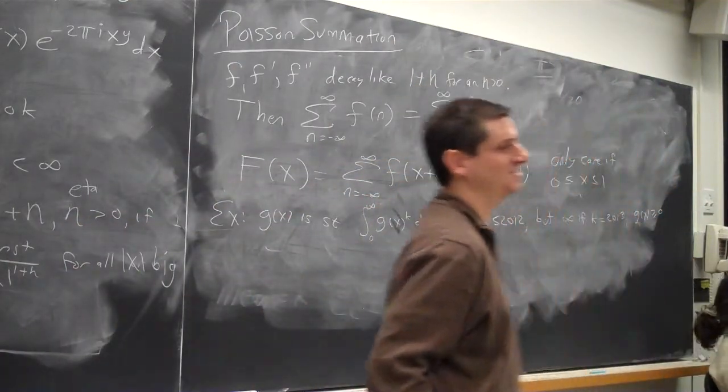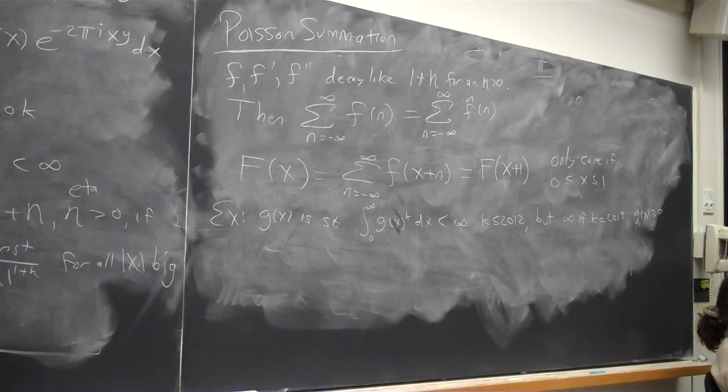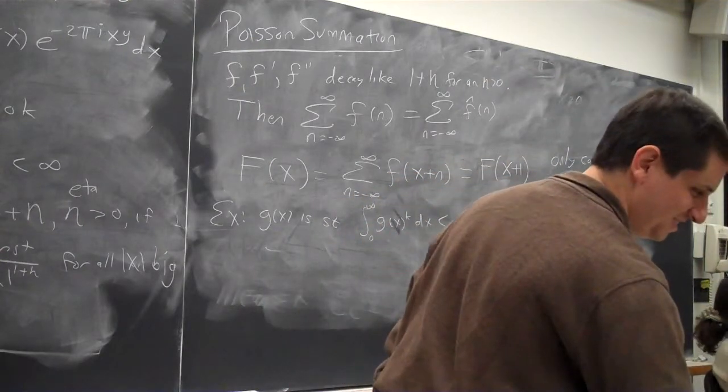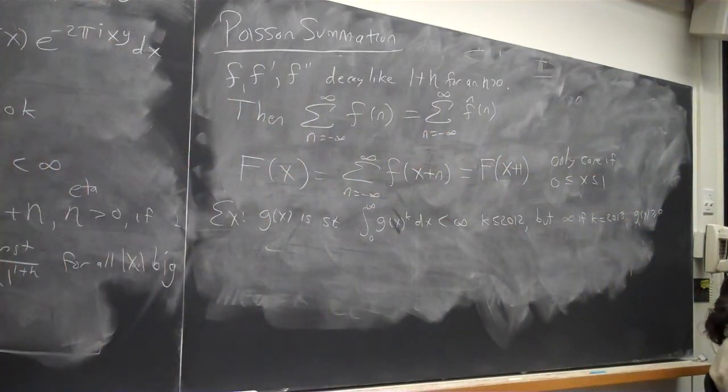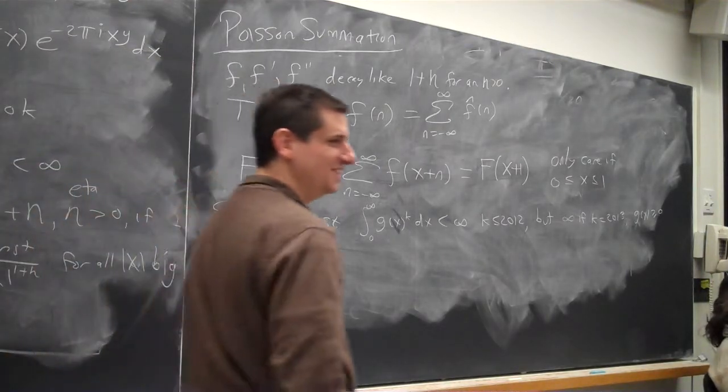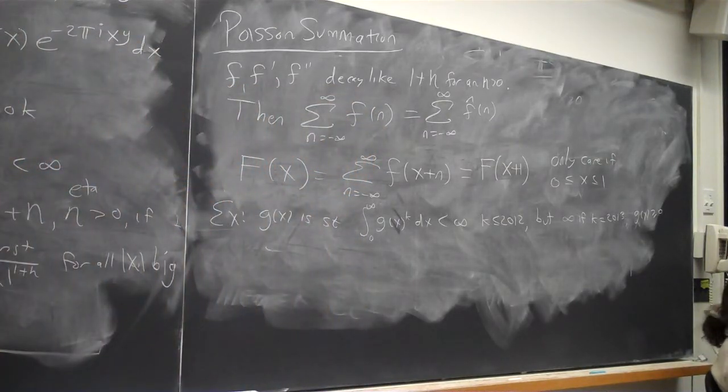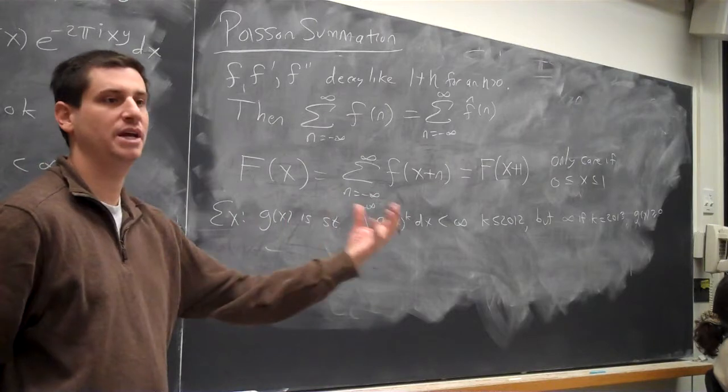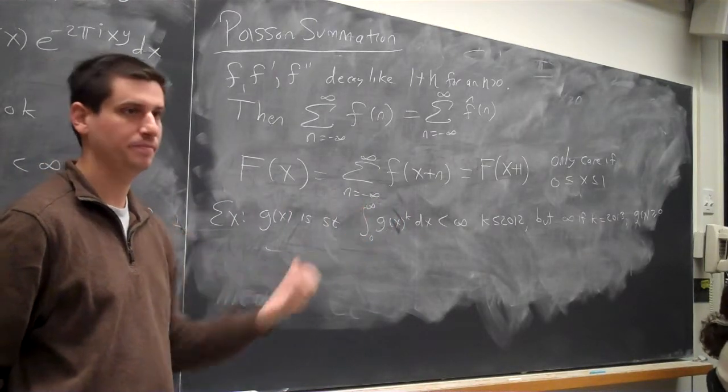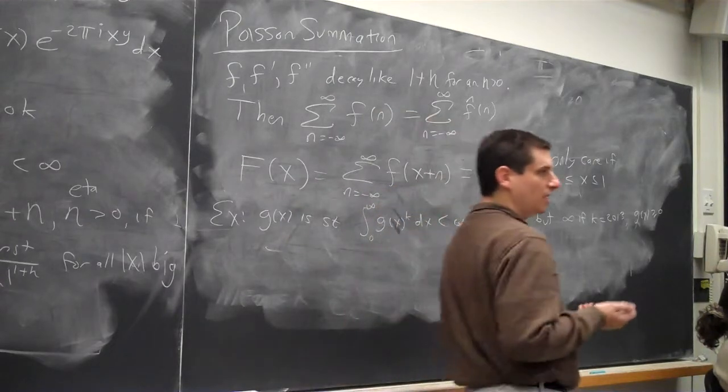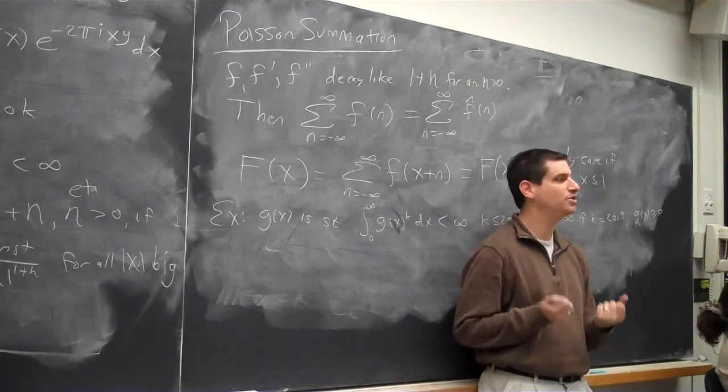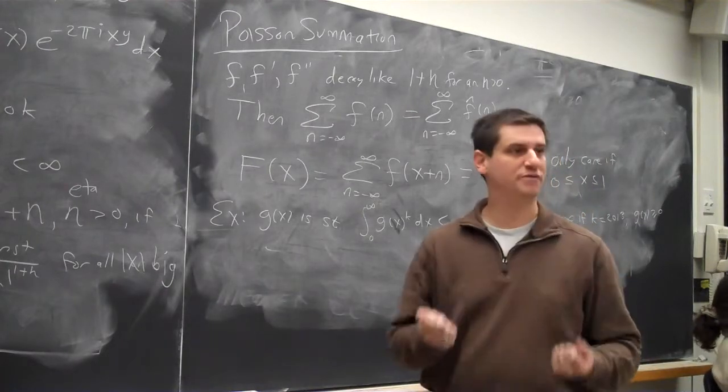The integral of g is finite. The integral of g squared is finite. The integral of g cubed is finite. The integral of g to the 2012 is finite. But the integral of g to the 2013 blows up. Yes, it exists. So when you look at a function and you're told the function integrates to a finite number, what do you think is happening as you go off to infinity? Going to zero. It's going to zero. But not necessarily. It just has to be going to zero most of the time. It could have spikes. I'm not going to bother doing a continuous example.